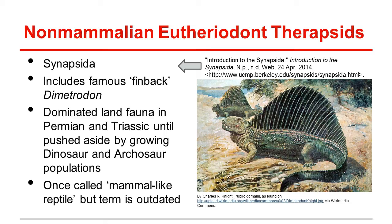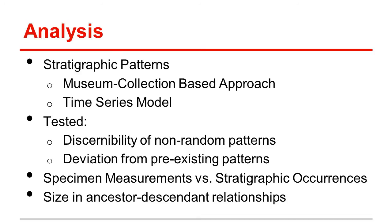The outdated term 'mammal-like reptile' refers to these animals but is no longer used as they are no longer considered reptiles. Huttenlocker looked at two major patterns — stratigraphic and phylogenetic — in his study of body size. Using museum specimens, he compared body size to the stratigraphic location of the specimen. He also used a time series model to determine if size decreased through evolutionary changes by looking at ancestor-descendant relationships.